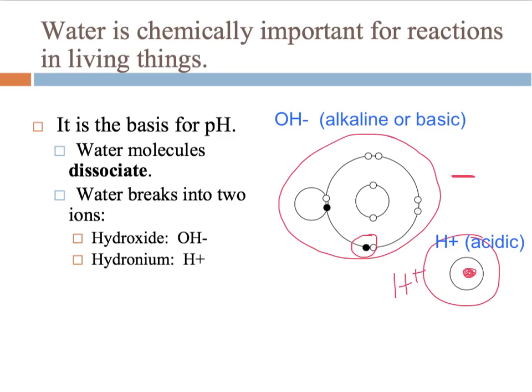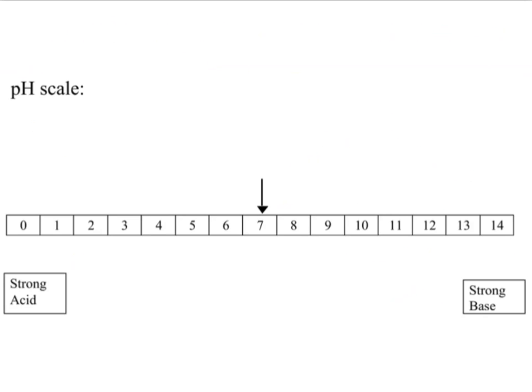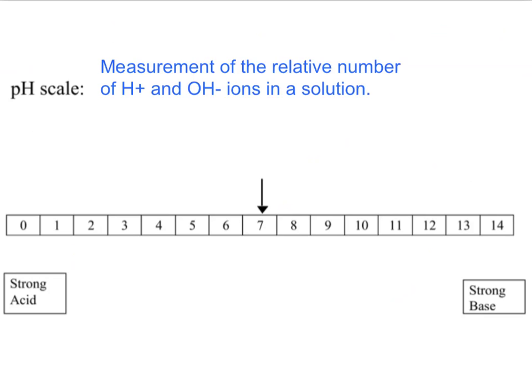OH-, or our hydroxide ion, is associated with alkaline or basic materials. H+, which is our hydronium ion, is associated with acids. In order to communicate which of these ions is in a higher concentration in solution, we use the pH scale. It is a scale that runs from 0 to 14, with 7 in the middle being our neutral pH.